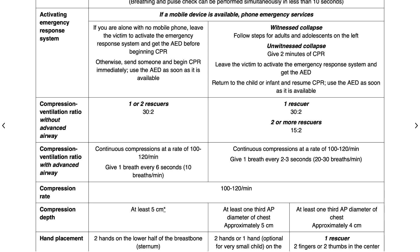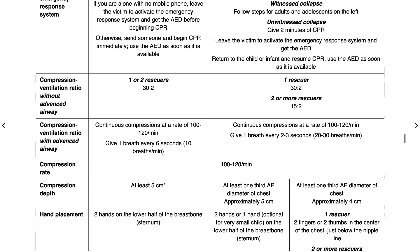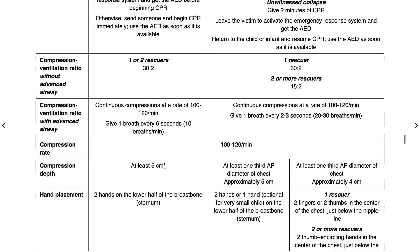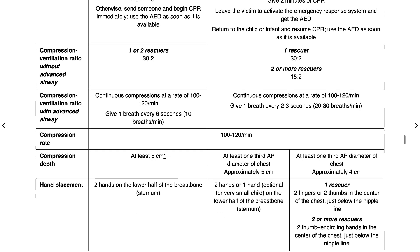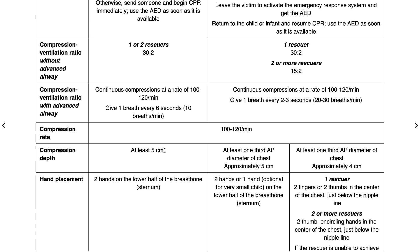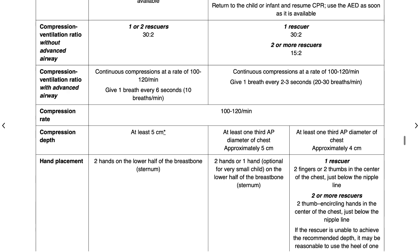Always remember, compression rate is pushing hard and fast at 100 to 120 pushes per minute. In adults, we need to push down at least 5 centimeters. In children and infants, we need to push down one-third of the anterior-posterior chest — approximately 5 centimeters in children and approximately 4 centimeters in infants.